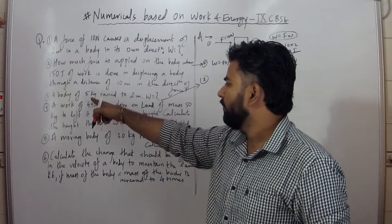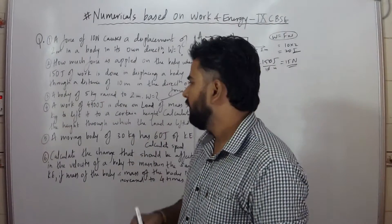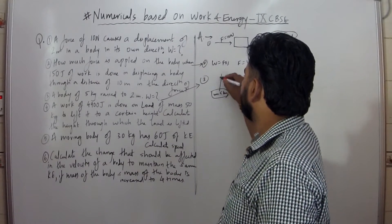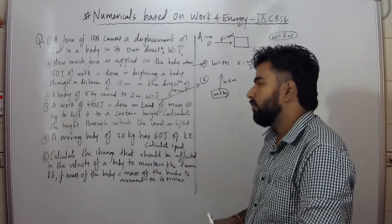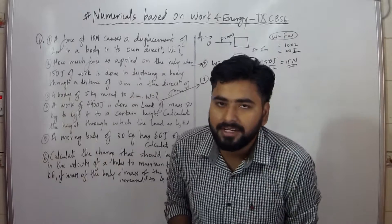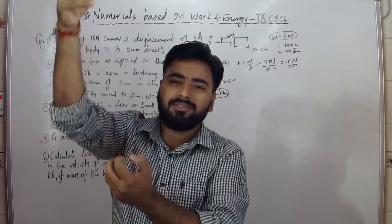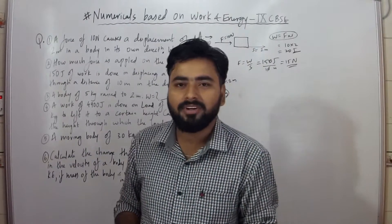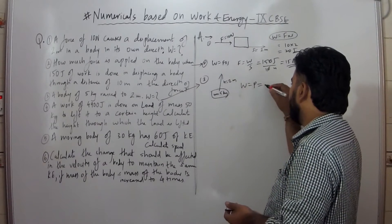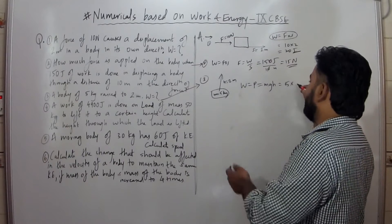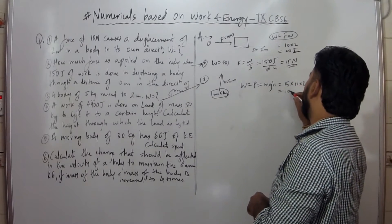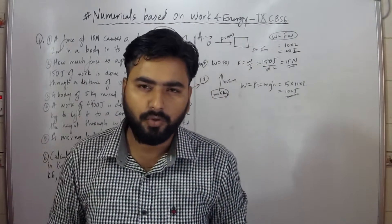Coming to the third one: a body of 5kg is raised to 2m — what is the work done? Here, position changes and the energy stored is potential energy. By the work-energy theorem, as much work is done, that energy is stored at the topmost point. So work is equal to potential energy, which is equal to mgh: 5 into g (10) into h (2) gives 100 joules.